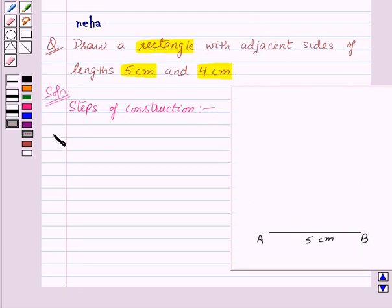So our first step of construction is draw a line segment AB equal to 5 cm.